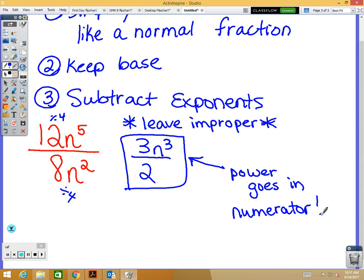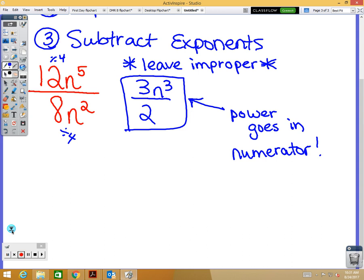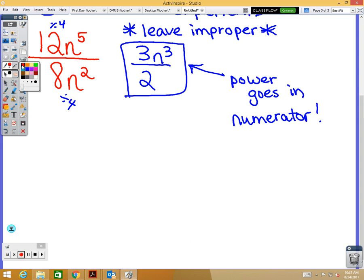So what we did on this problem again, we said 12 and 8 reduce down to 3 over 2. Keep your N. 5 minus 2 is 3, so N to the third power, which goes in your numerator. And we're going to leave it improper. We're not going to say 1 and 1 half N to the third power. We're leaving it improper. When we start talking about slope this year, we'll leave slope improper as well. So, alright, let's do a couple more examples with these, because these are probably the most difficult.